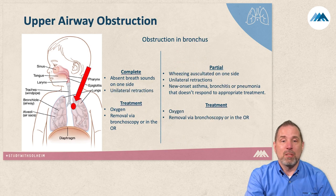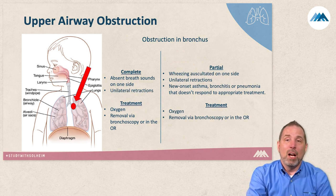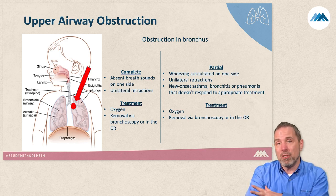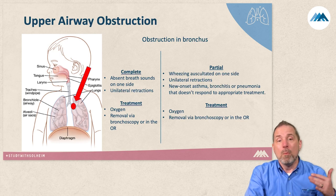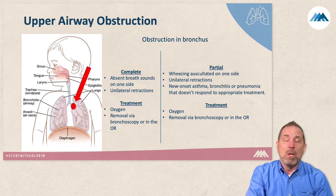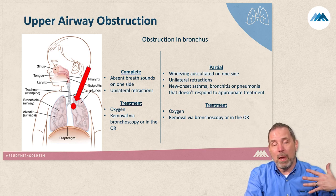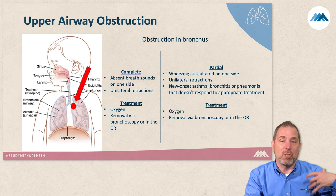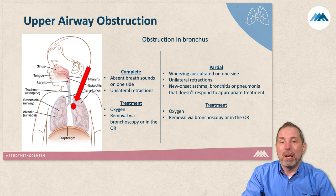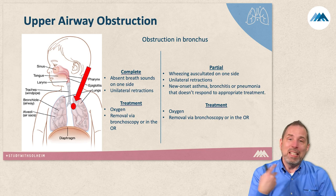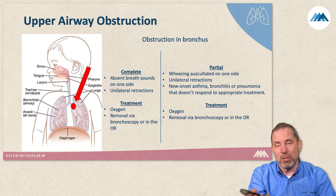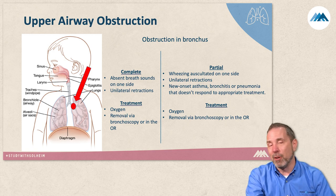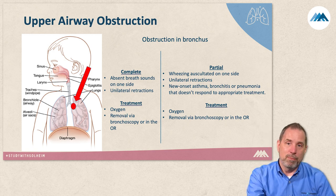If the foreign body is down in the bronchus — in the main stem or down in the lung field — you'll see a unilateral loss of breath sounds. The child can still breathe on the other side, so you'll have airway sounds on one side and diminished or absent sounds on the other, possibly with wheezing. But it goes back to the same principle: if you hear any airway sounds, support the patient. Treatment is the same on both sides — oxygen and prepare to remove it. Don't overthink it; it goes back to BLS.